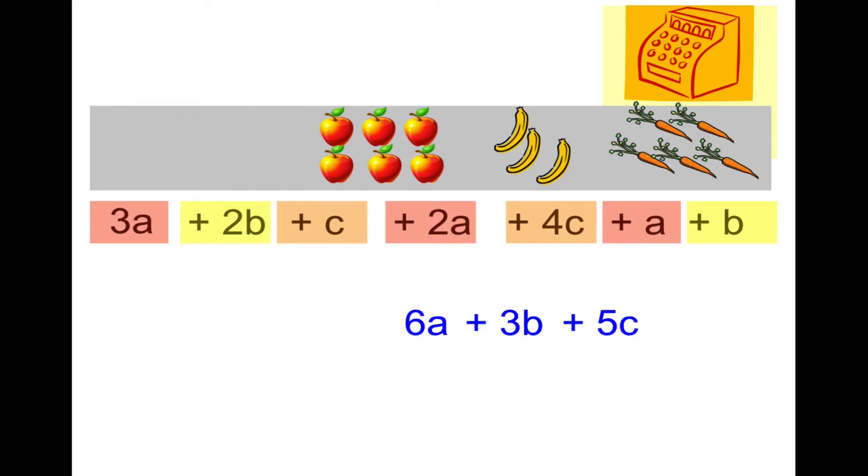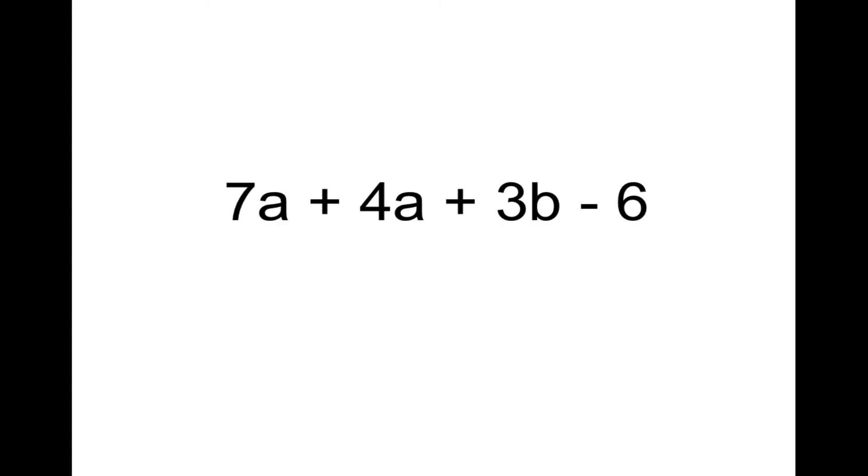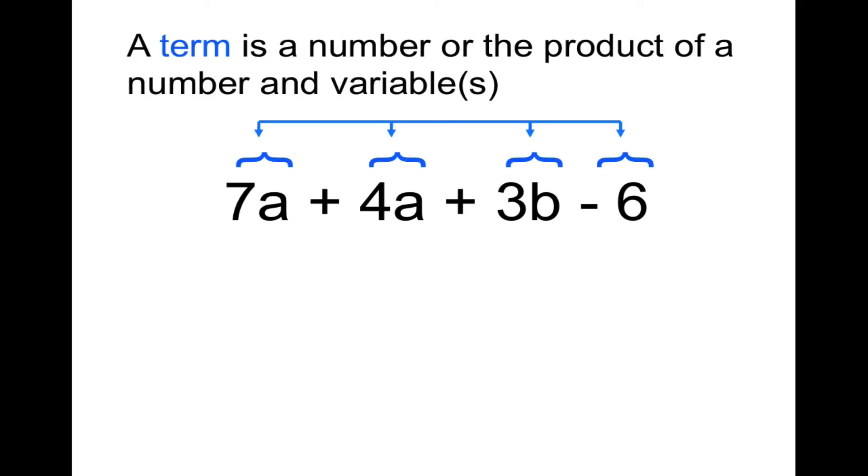It's definition time. I'm going to use this example for my four definitions: 7a plus 4a plus 3b minus 6. This is a quadrinomial, a variable expression with four terms. First, let's define term. A term is a number like 6 or the product of a number and a variable like 7a or 4a.